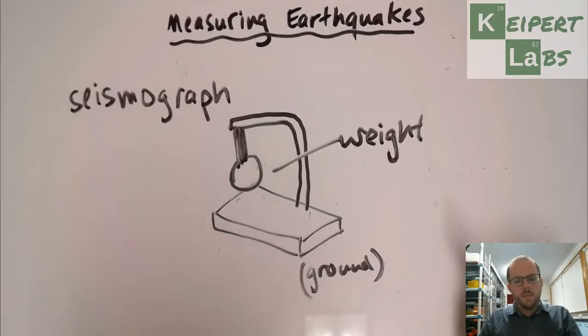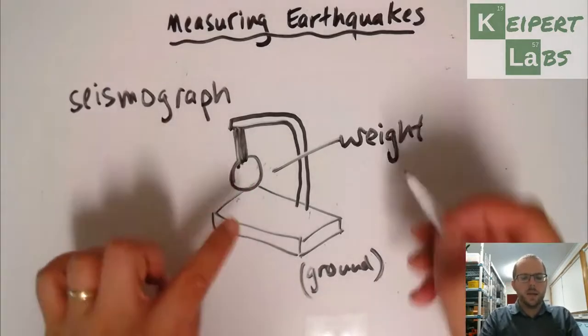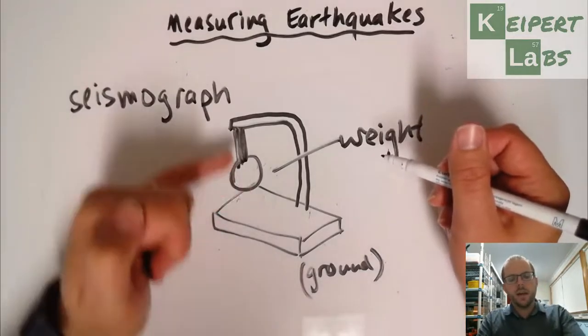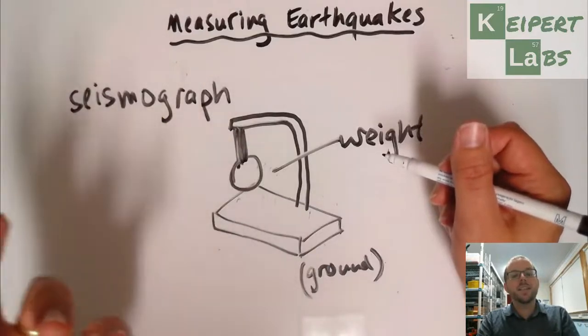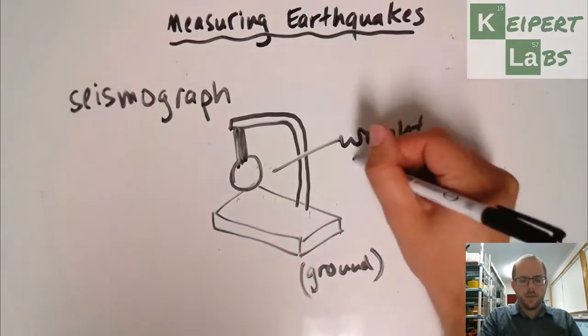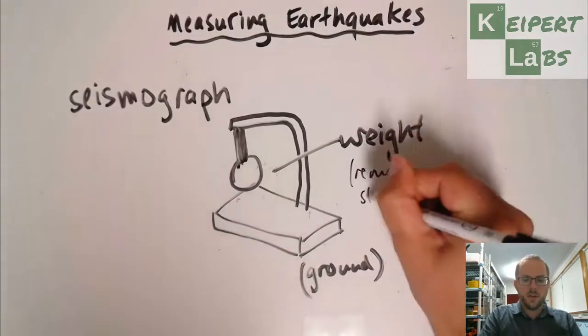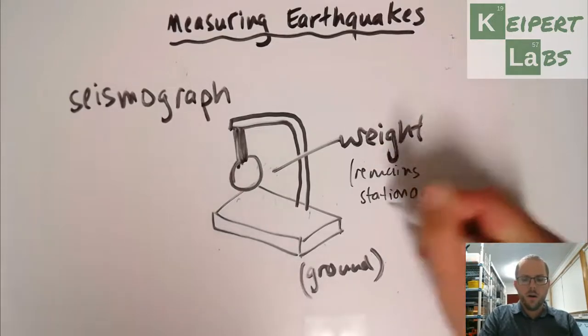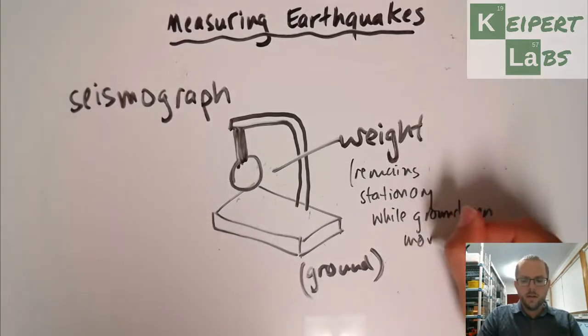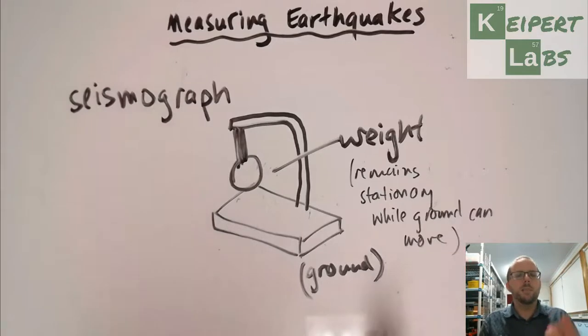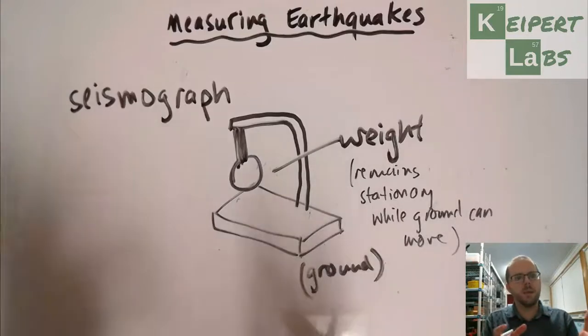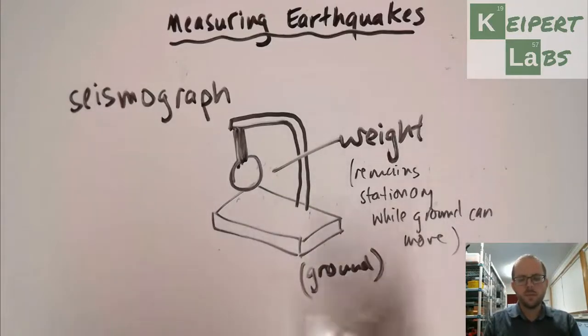What happens is that this weight here, maybe it's got some mass to it, it's quite heavy, like a heavy metal ball or something like that. It's designed so that when it hangs here, it actually is able to stay still when the ground moves. So it remains stationary while ground can move. It's like if you hung a balloon from a piece of string in your car, it can stay in place while your car moves.